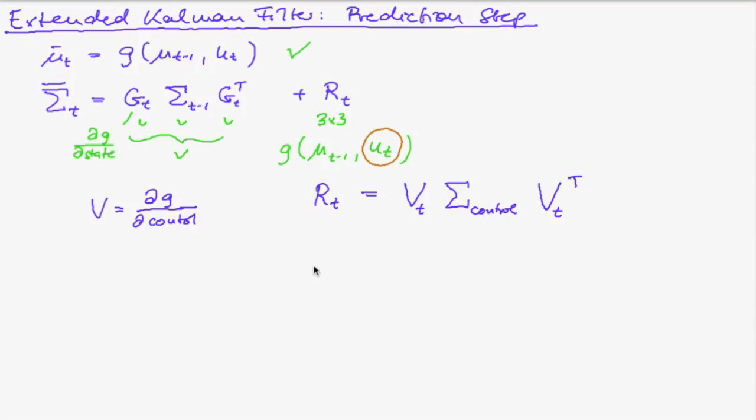And in order to write that out we will have r_t is v_t times the variance of the left control, the variance of the right control times the transpose of v. So those variances capture the inexactness of our movement of the left and right track of the robot assuming that there is no correlation between the two.